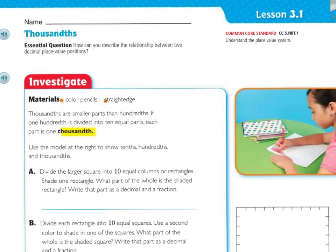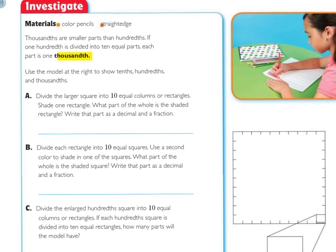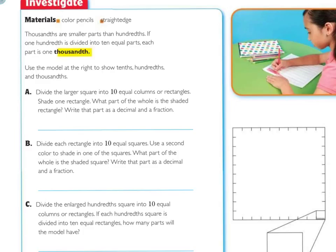Thousandths are smaller parts than hundredths. If one hundredth is divided into ten equal parts, each part is one thousandth. That is a vocabulary word for this lesson, thousandths. Use the model at the right to show tenths, hundredths, and thousandths.